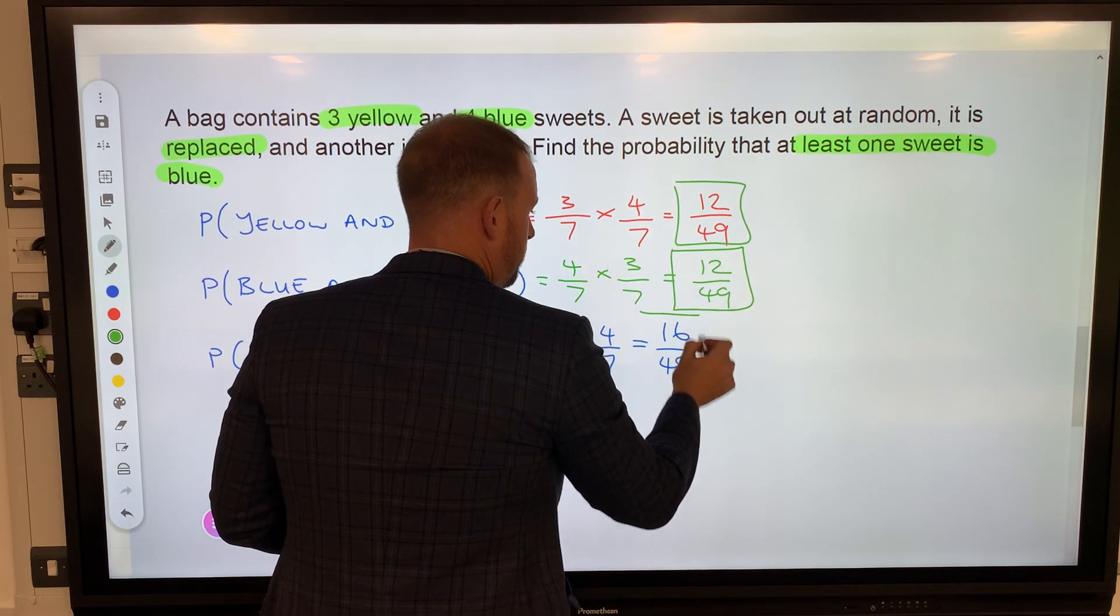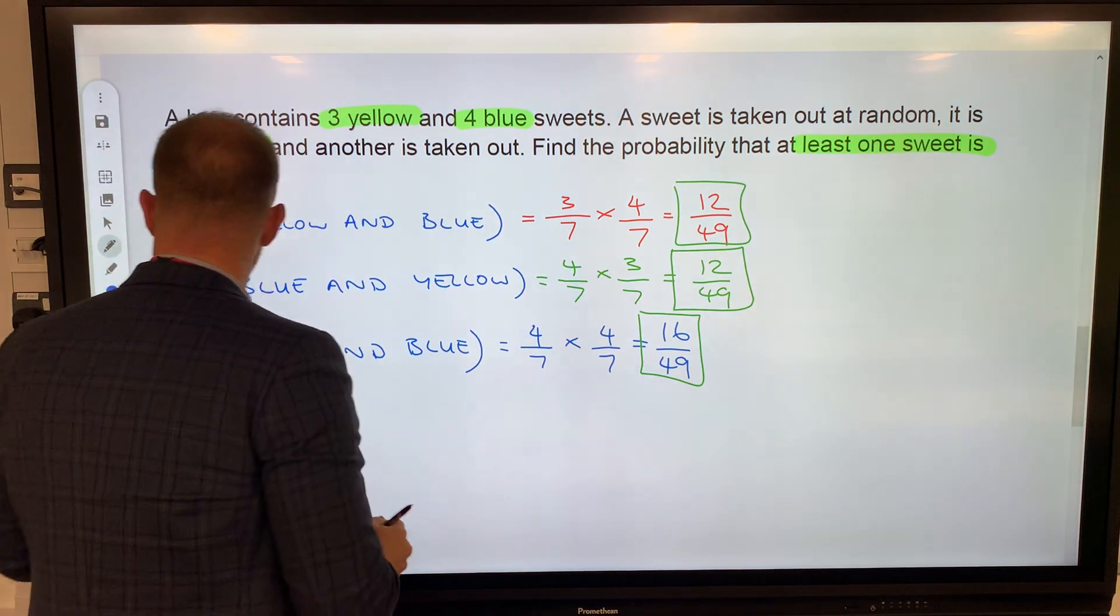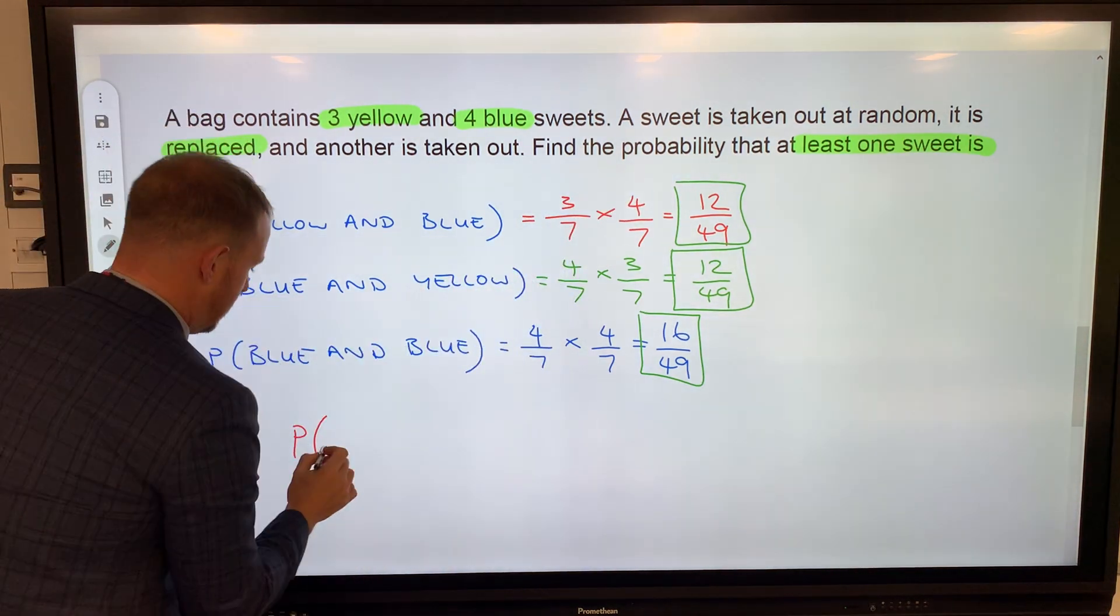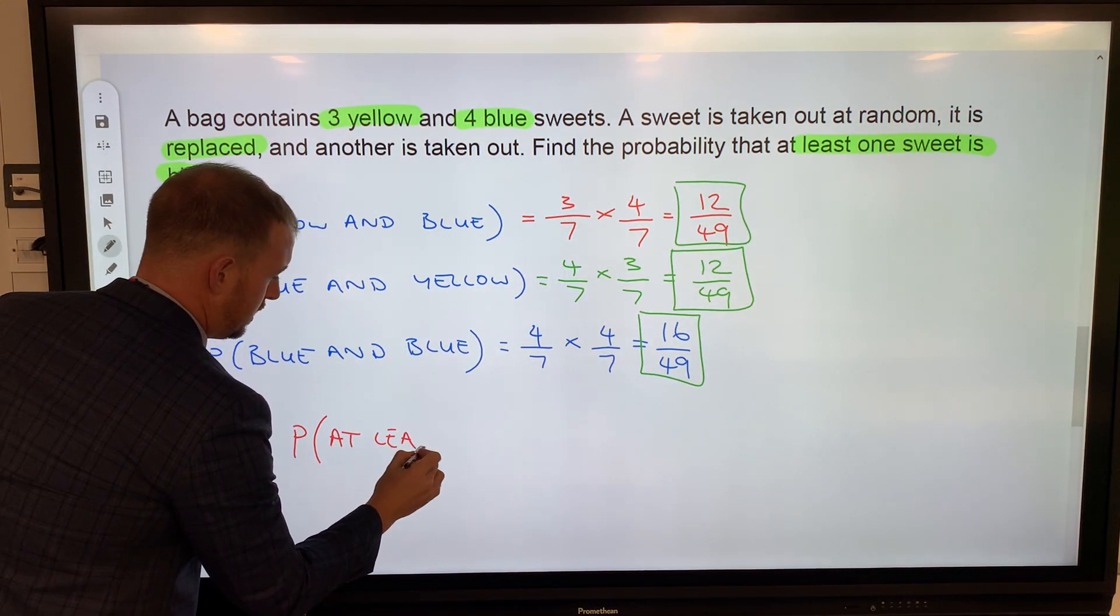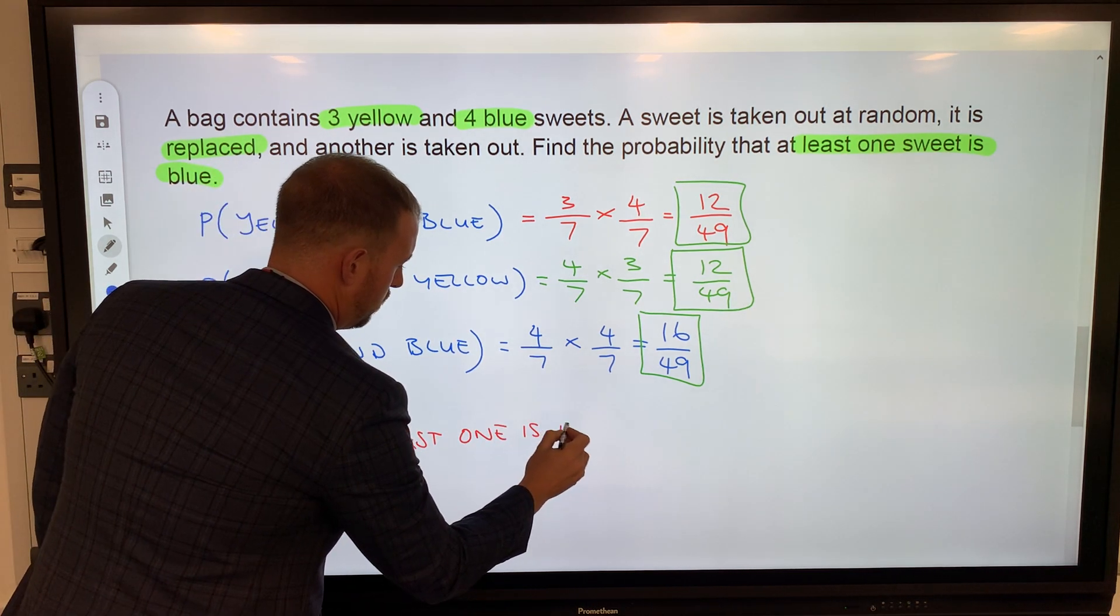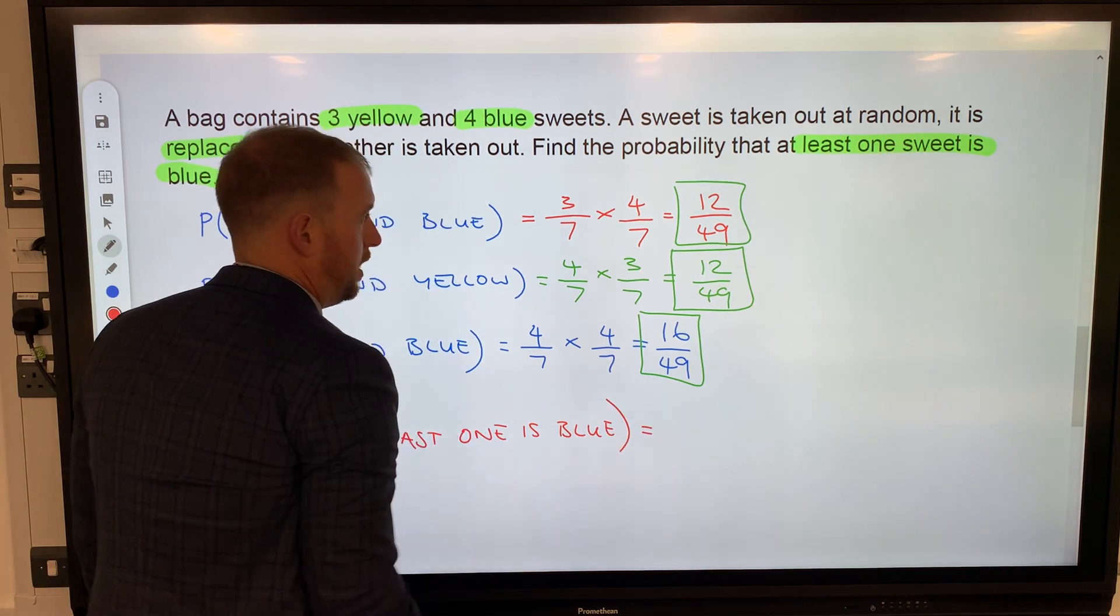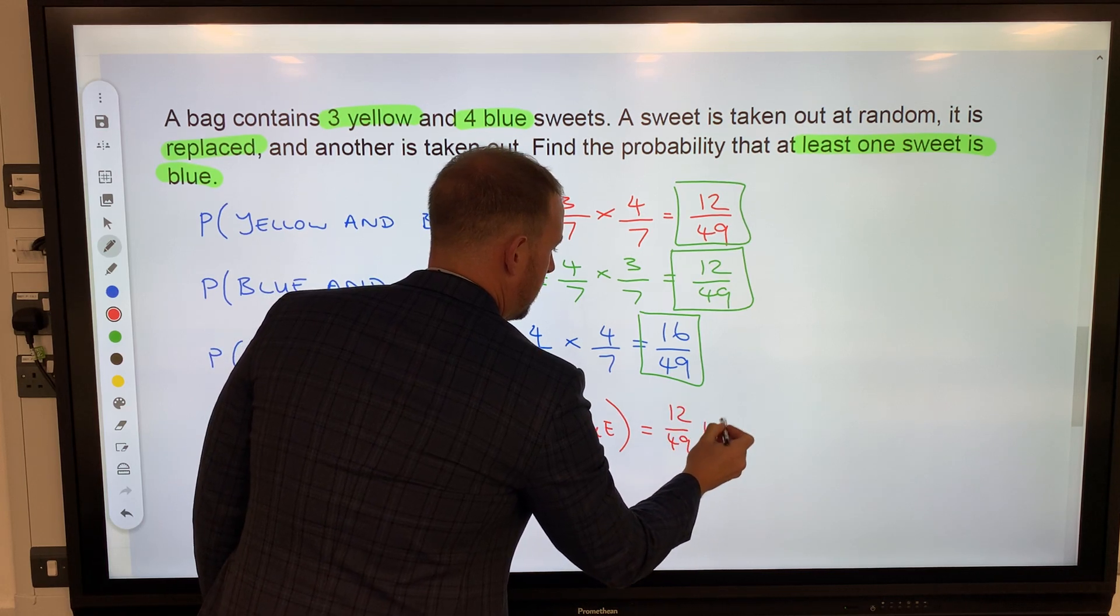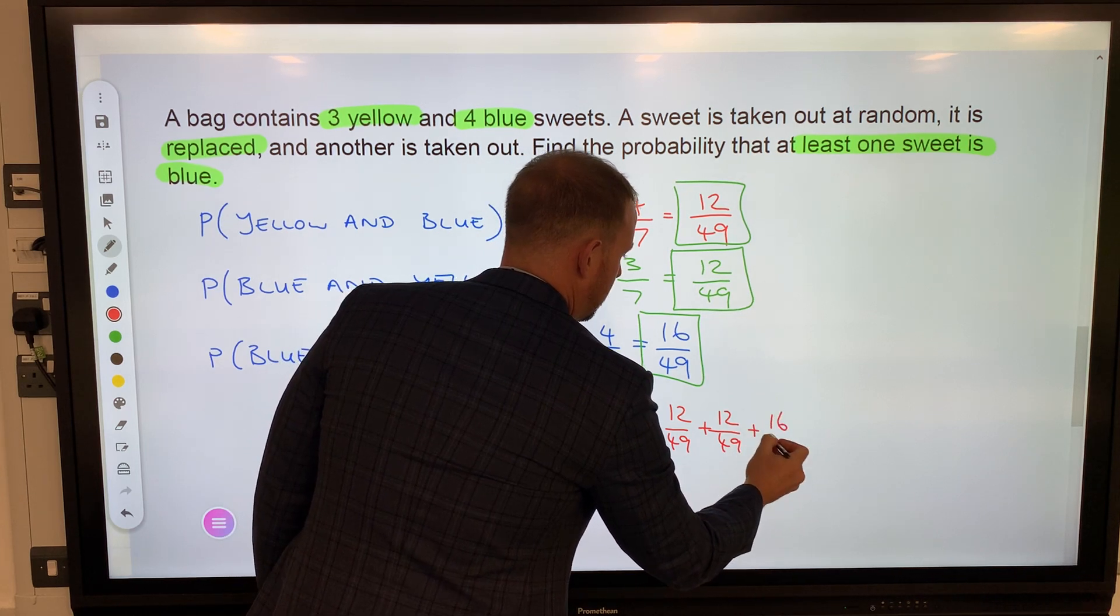However, I haven't answered the question fully yet. I've worked out all my different variations, all my different possible outcomes. But the probability that at least one is blue would be this one and that one and that one. We have to add these all together. So the probability that at least one is blue would be to add these together: 12/49 + 12/49 + 16/49.